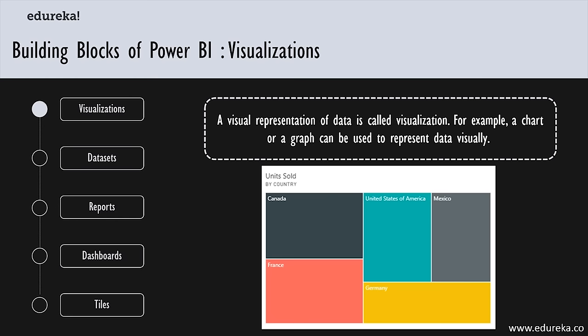Power BI gives you different visualization types which keep getting updated. Some commonly used visualizations are map representation, card visualization, stacked area chart, treemap, and pie chart. These visualizations can be simple or complex, but they aim at presenting data in a way that gives more insight in context — insight that is otherwise difficult to discern from simple data files.